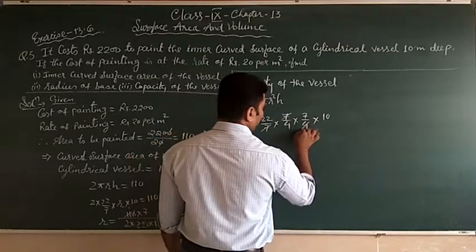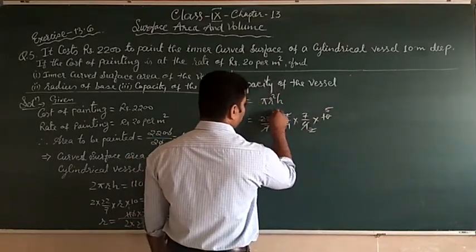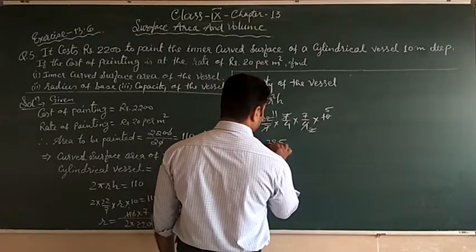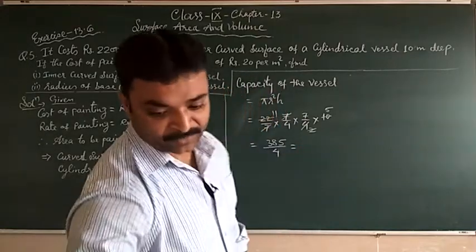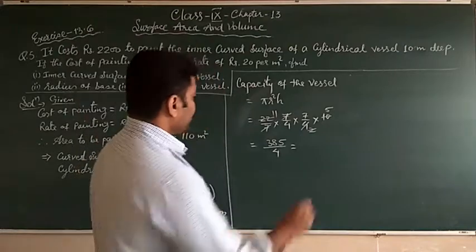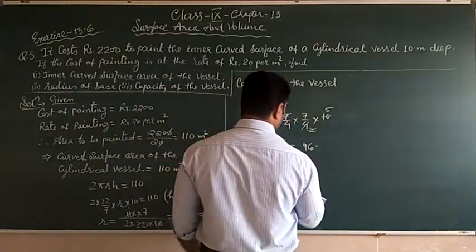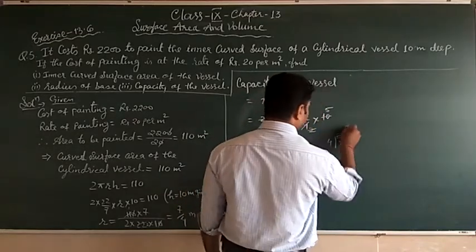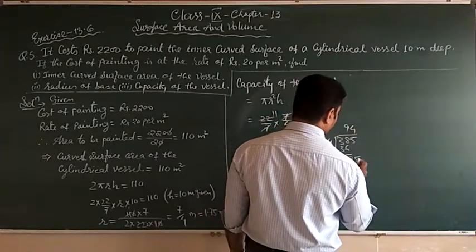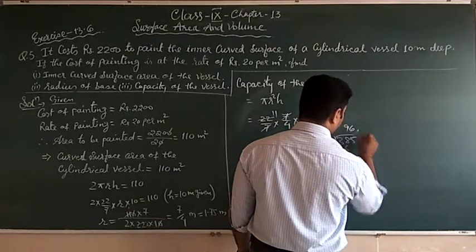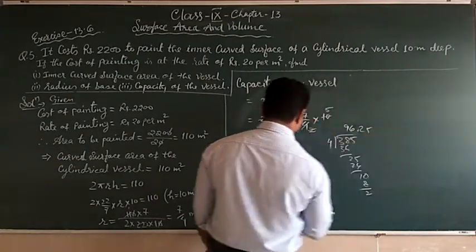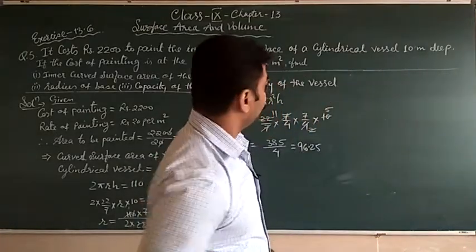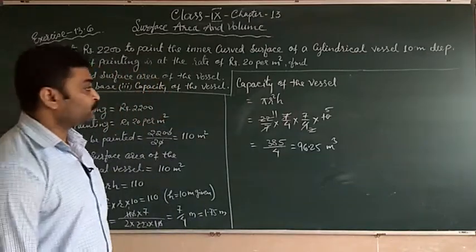After canceling and multiplying, 11 into 7 is 77 into 5 gives 385 upon 4, which is equal to 96.25 meter cube is the capacity of the vessel.